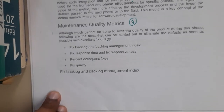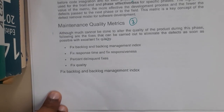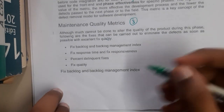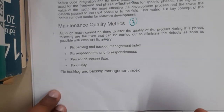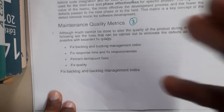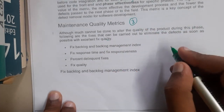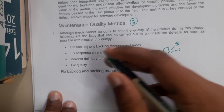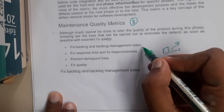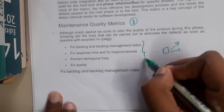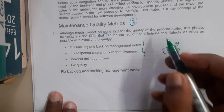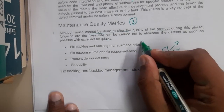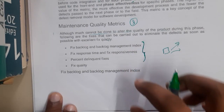Hello guys, we're back with our next lecture. In this lecture let us continue with the maintenance quality metrics. Basically, maintenance is something which can be done for only a few components — you cannot change the whole project. That is the reason why it cannot alter the overall quality of the software.